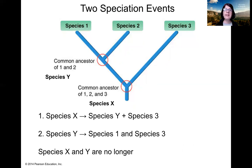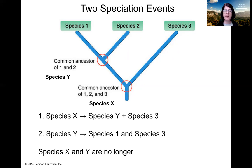This simple tree is the result of two speciation events. The first branch point I call species X. Species X is the common ancestor of species one, two, and three. The first speciation event is when species X split into two different species: species Y and species three. Species Y is the common ancestor of species one and two.